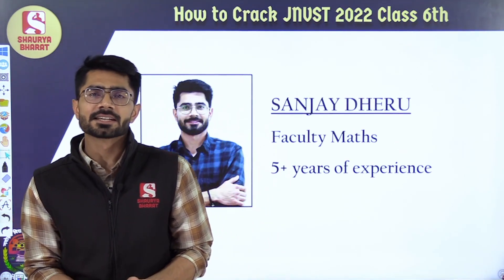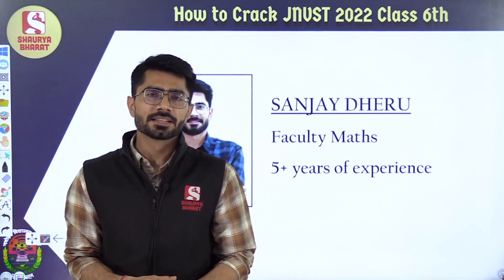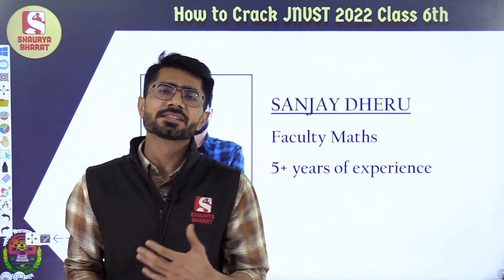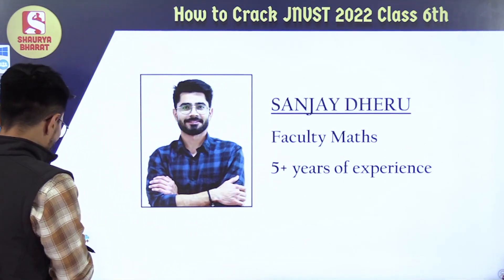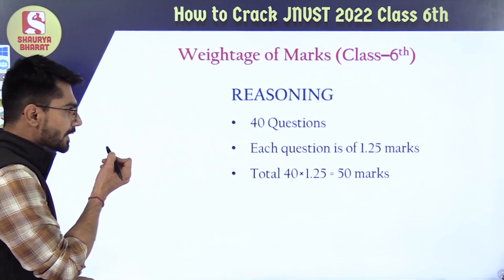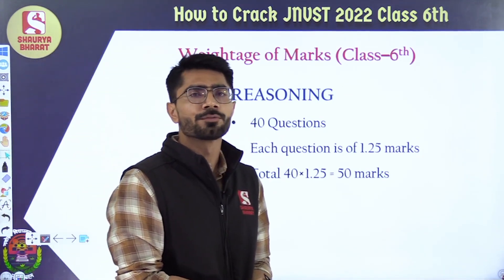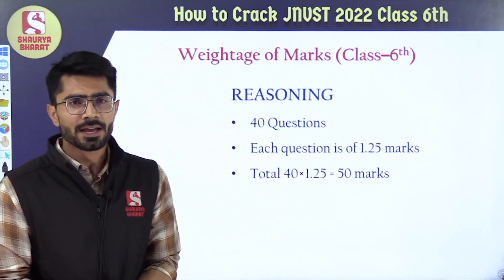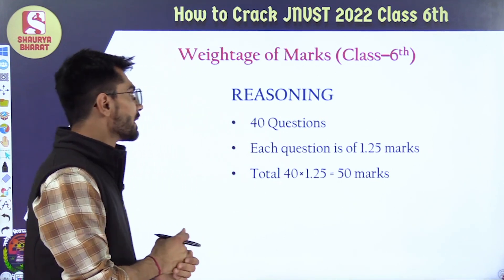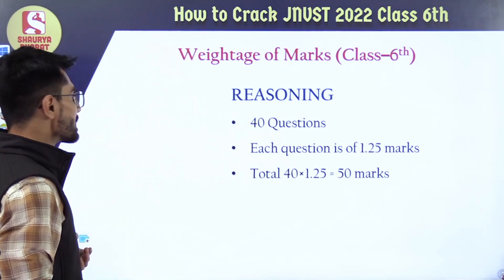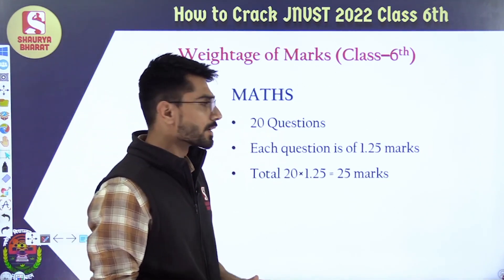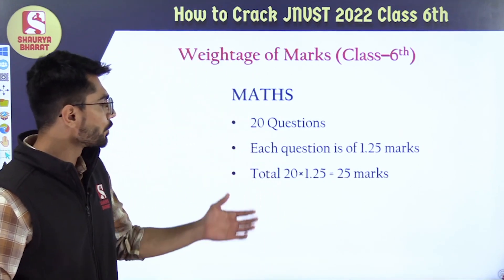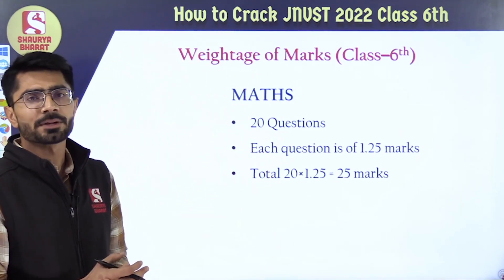In the JNVST Class 6 examination, the reasoning and maths portion comes in. In reasoning, you have 40 questions, each question carries 1.25 marks, maximum marks is 50, and negative marking is not there. In maths, only 20 questions come in, each question contains 1.25 marks, again no negative marking, and total marks is 45.